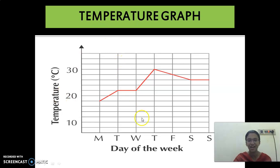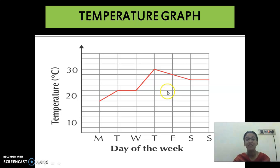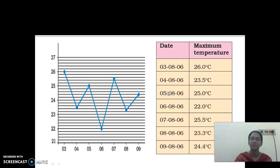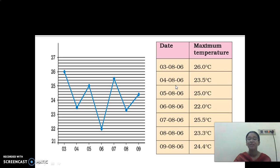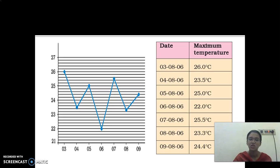We have seen a temperature graph. A temperature graph for a week is given here. From this graph we are clear that the temperature is not the same every day — it varies. So, we are going to see one more graph. Do you know how to draw a graph? By taking a graph sheet, we have to mark the axes as x-axis and y-axis. In the x-axis, what have we taken? We have taken date.